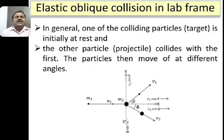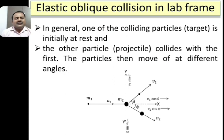Next, coming to the elastic oblique collision in a laboratory frame. This kind of situation arises when we do collision experiments in a laboratory where one particle at rest is made to collide with another particle moving with certain velocity. In general, one of the colliding particles is initially at rest — that particle is called the target — whereas the other particle which collides with it is known as the projectile.